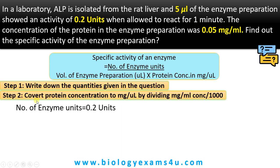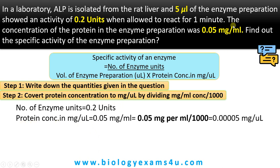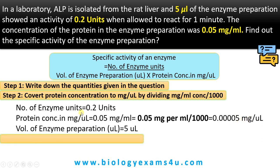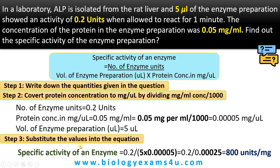Step 1: substitute the given values. Convert protein concentration to mg per microliter by dividing mg per ml by 1000. Enzyme units is 0.2 units. Protein concentration is 0.05 mg per ml, which we divide by 1000 to get 0.00005 mg per microliter. Volume of enzyme preparation is 5 microliters. Substituting into the equation: 0.2 divided by 5 multiplied by 0.00005, which equals 0.2 divided by 0.00025.